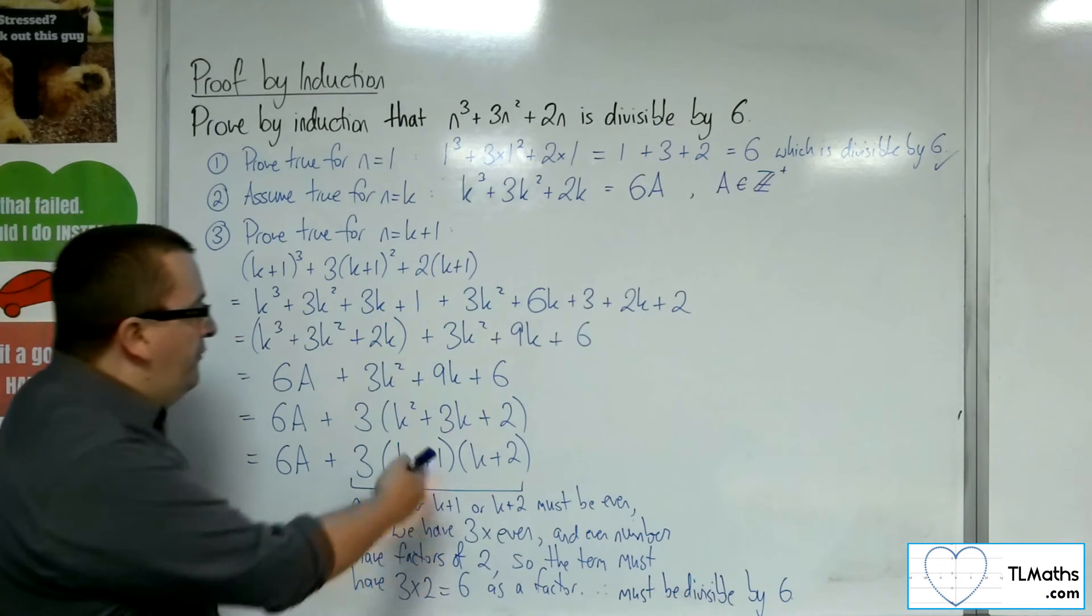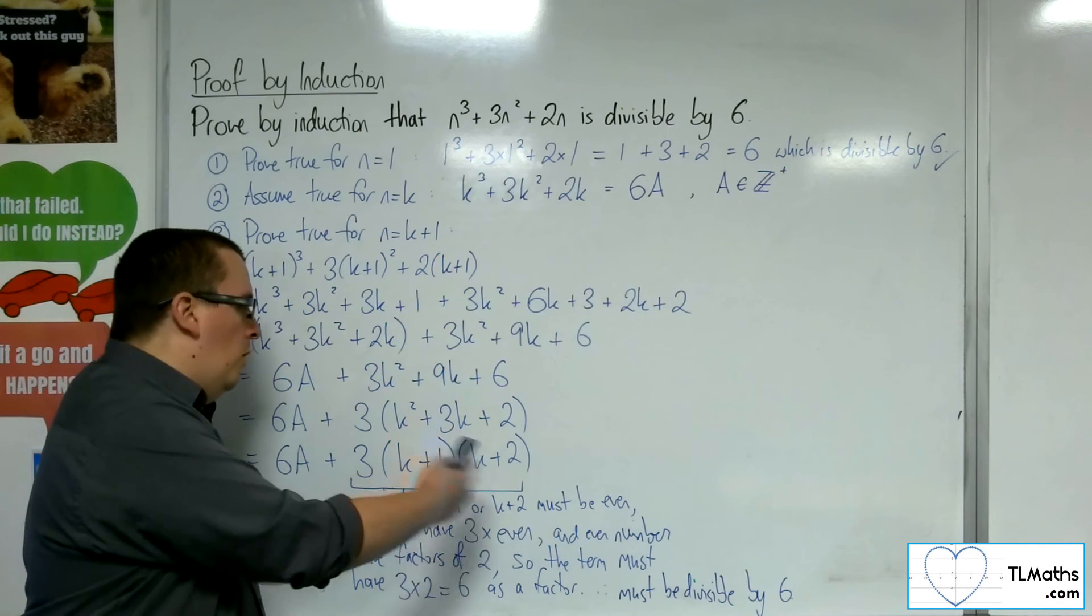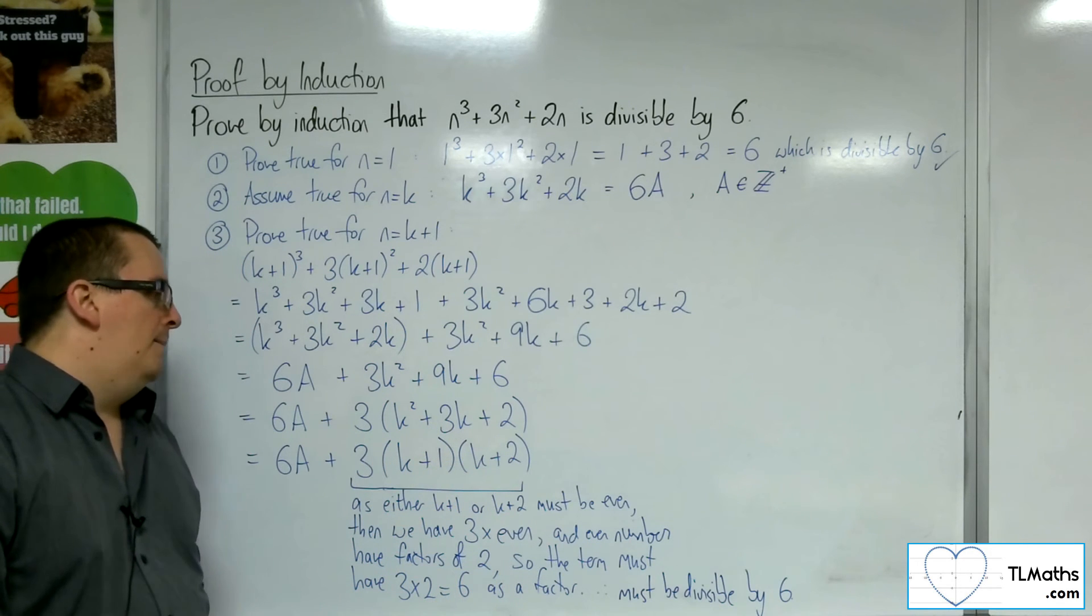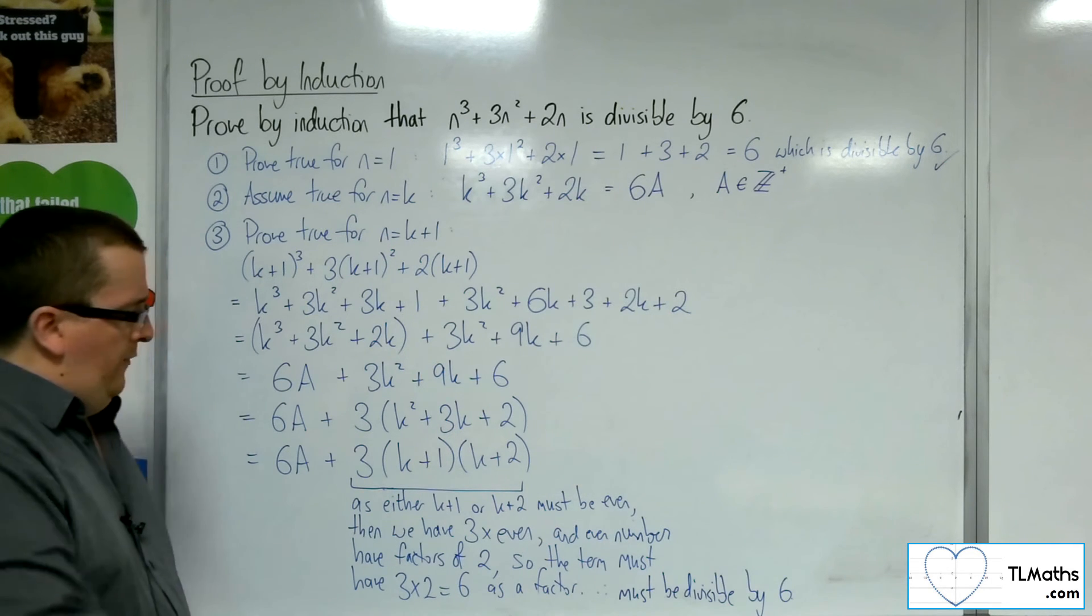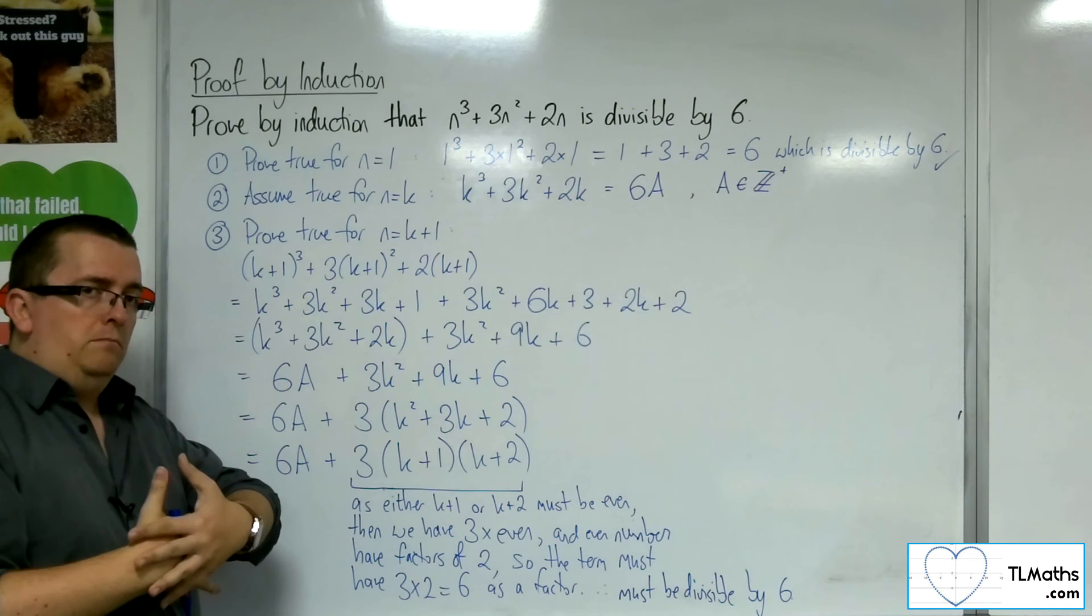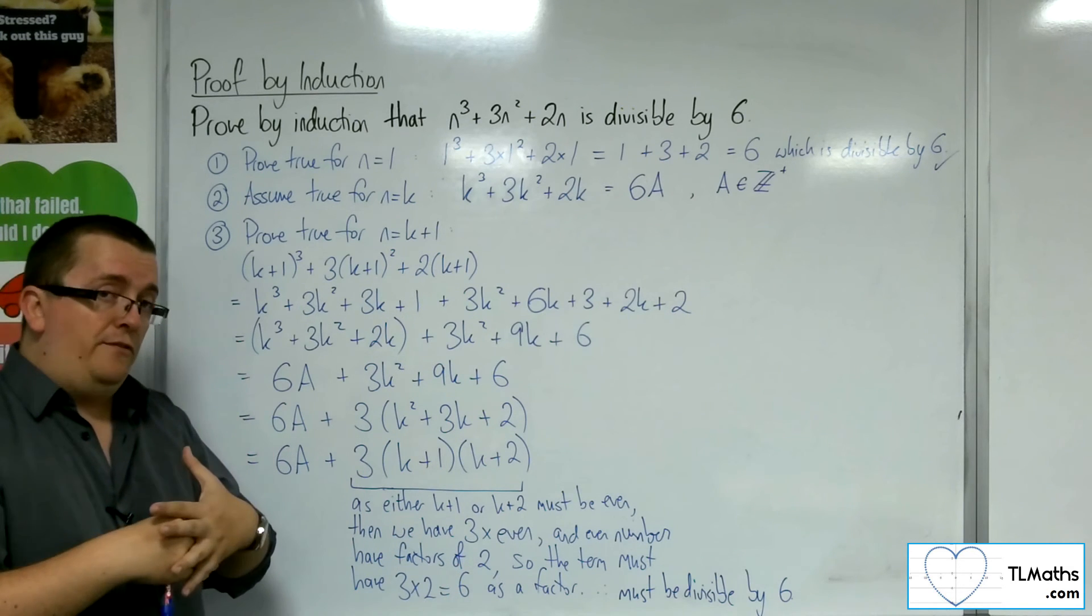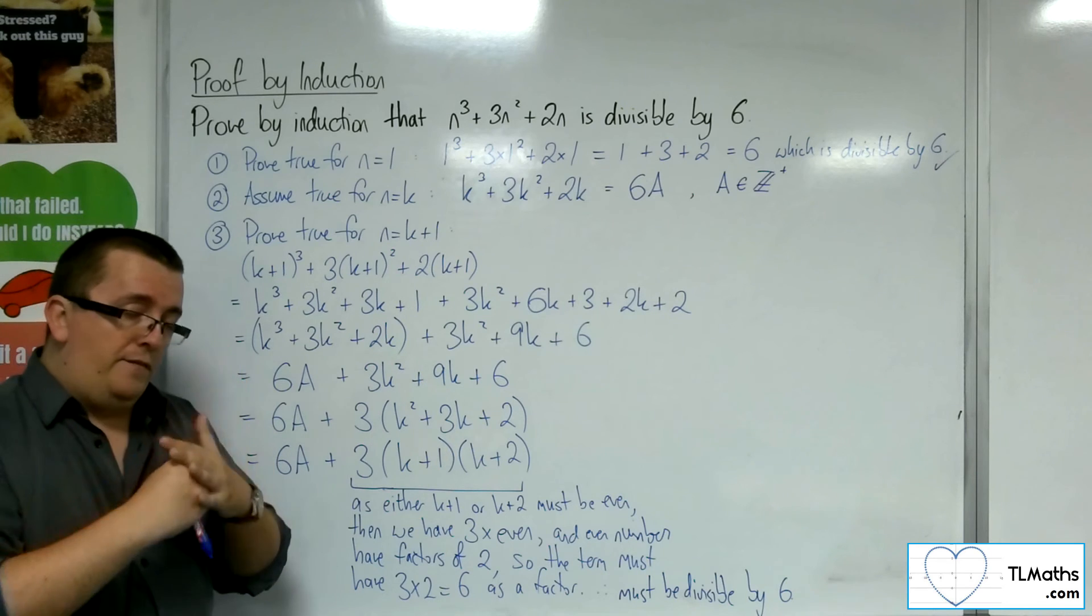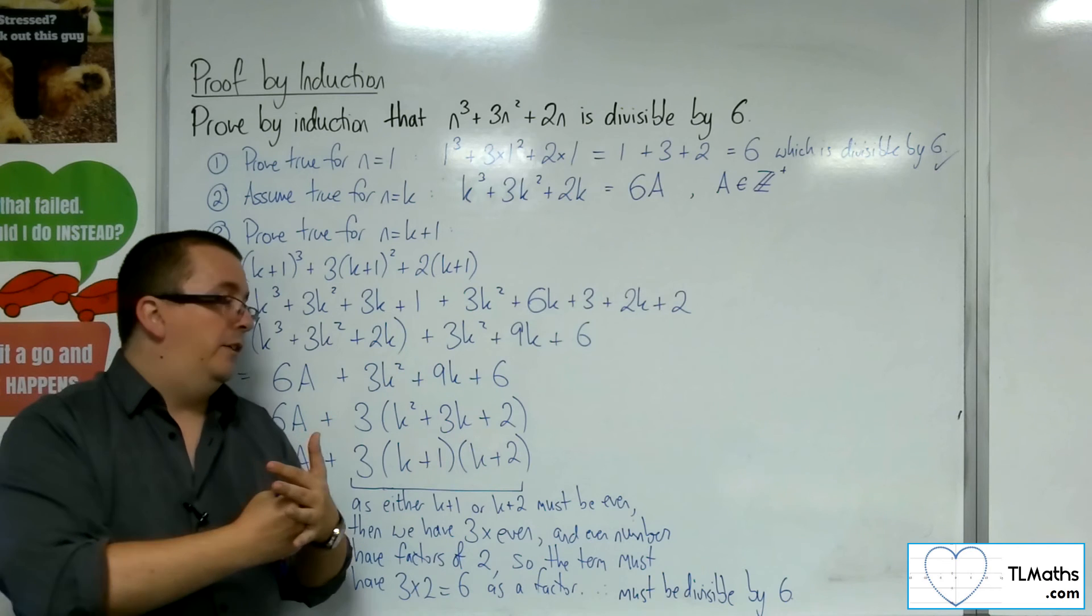So, this final part here of explaining as to why this must be divisible by 6, if you could go into an explanation at some point, and it's not algebraic like I've done here, that's perfectly fine. That is perfectly fine as a part of your proof. To explain yourself.